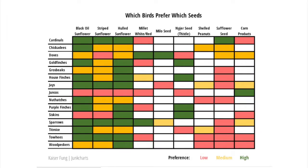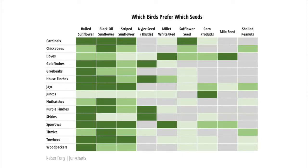In the second episode, I featured a step-by-step example of how to enhance a data graphic by pulling out the message from the data. Here are the before and after views of the data table that shows which birds prefer which seeds. All I did can be accomplished in Excel.